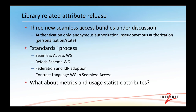Three new bundles are now in the library space that are of interest. They've been proposed and are available for comment. They cover the use cases for authentication only, anonymous authorization, and pseudonymous authorization, which allows some personalization and state. The standards process for this is community-based. We began in a working group convened by Seamless Access. The proposal was passed to REFEDS, the International R&E Federation Schema Group, for consideration, comment, and adoption. Now we're at the stage where hopefully federations and IDPs will begin to adopt it, and it's also being reflected in the contract language working group.